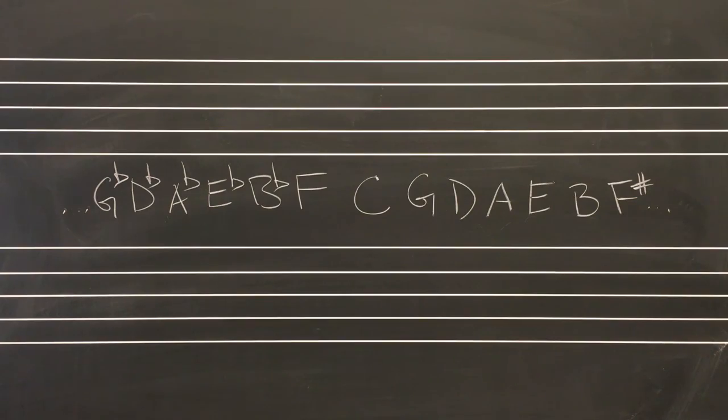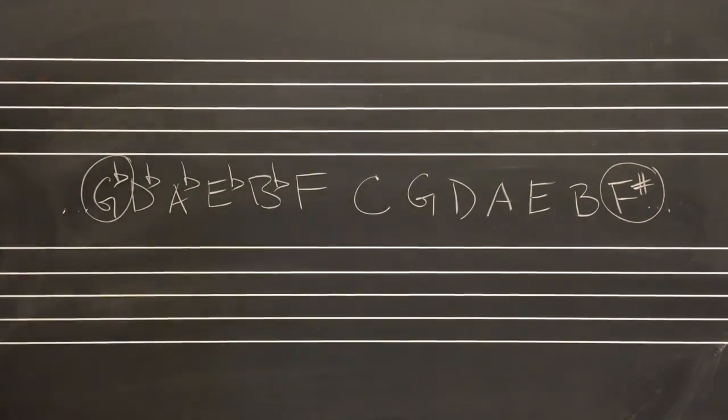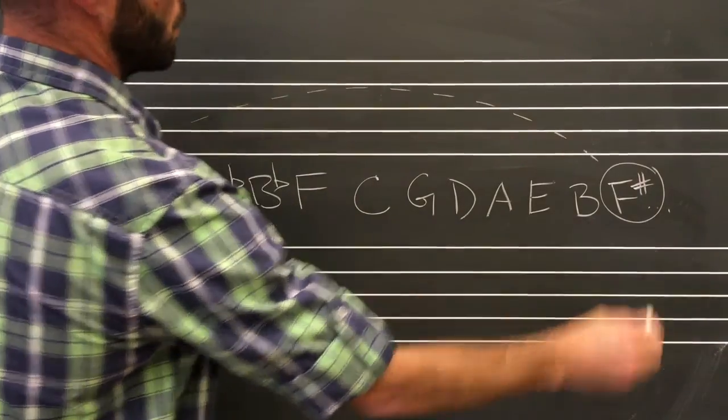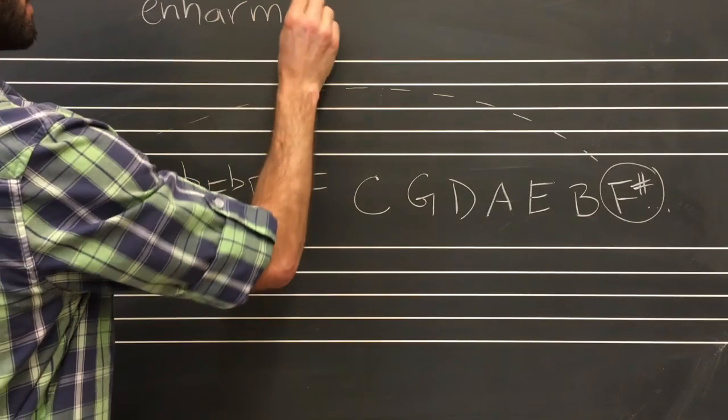Notice that the keys F-sharp major at the far right of the spectrum, and G-flat major at the far left of the spectrum are enharmonic equivalents.